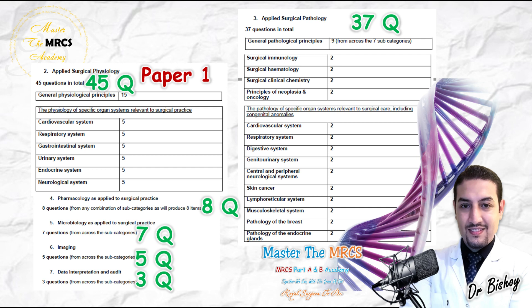Regarding pharmacology, there are eight pharmacological questions in the exam, which are subcategorized and overlap with many chapters. For surgical pathology, there are 37 questions, categorized as approximately two questions per chapter. The pathology serves as a revision alongside every surgical specialty question, so you will naturally become familiar with pathology and can earn those marks in the exam.